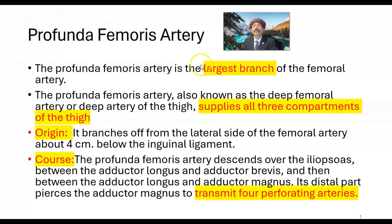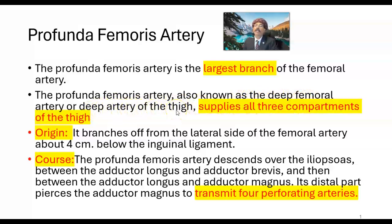The profunda femoris artery is the largest branch of the femoral artery. It is also known as the deep femoral artery or deep artery of the thigh, also called arteria profunda femoris. It supplies all three compartments of the thigh: the medial compartment, posterior compartment, and anterior compartment structures like muscles.